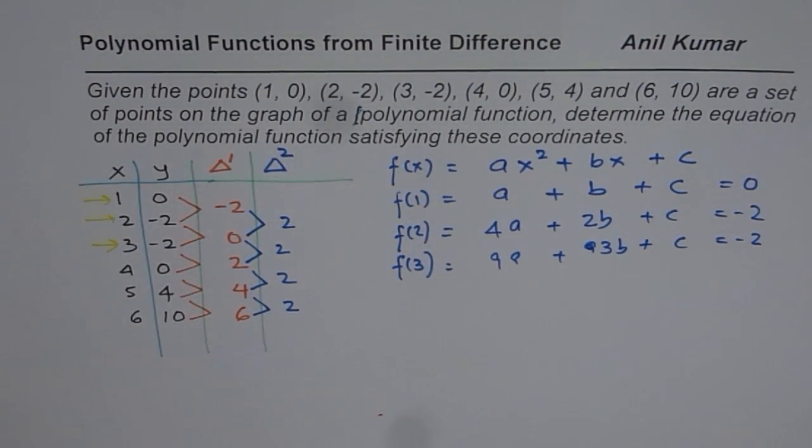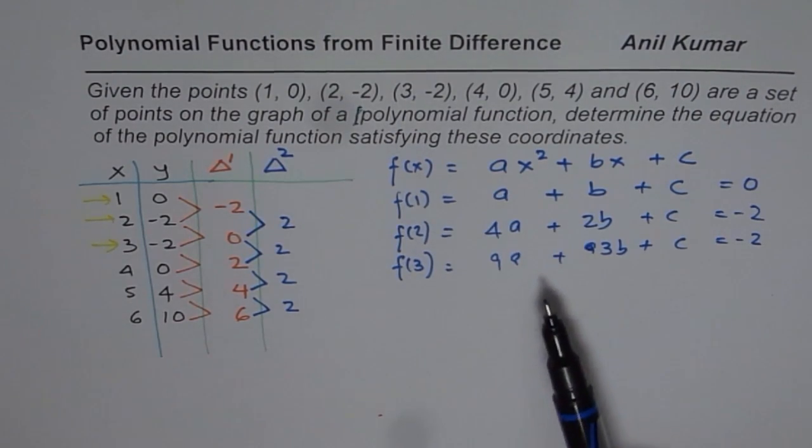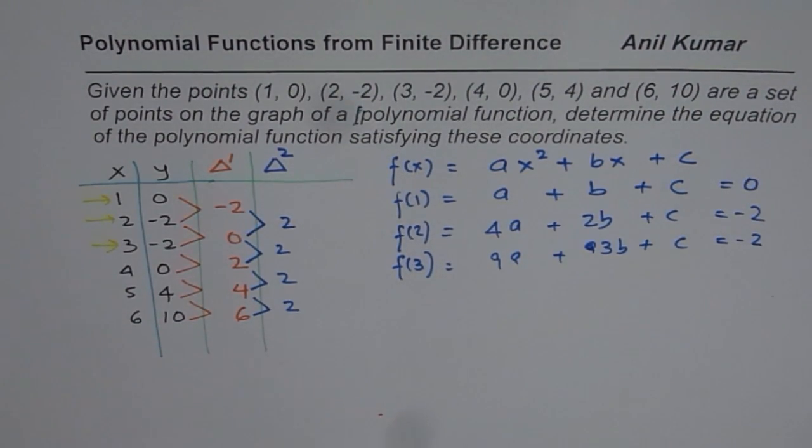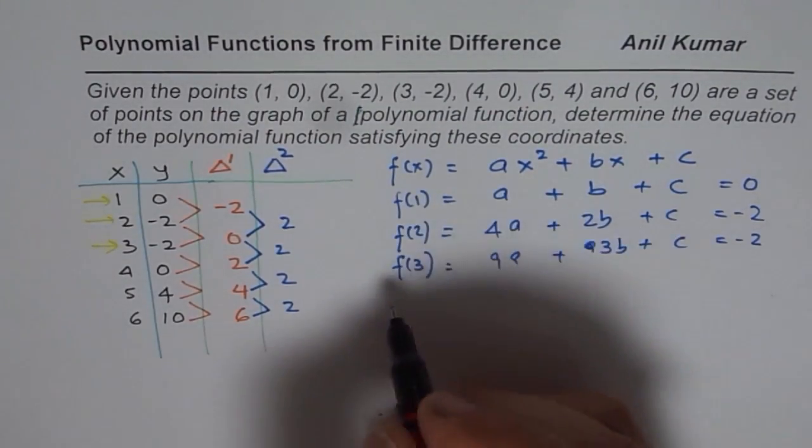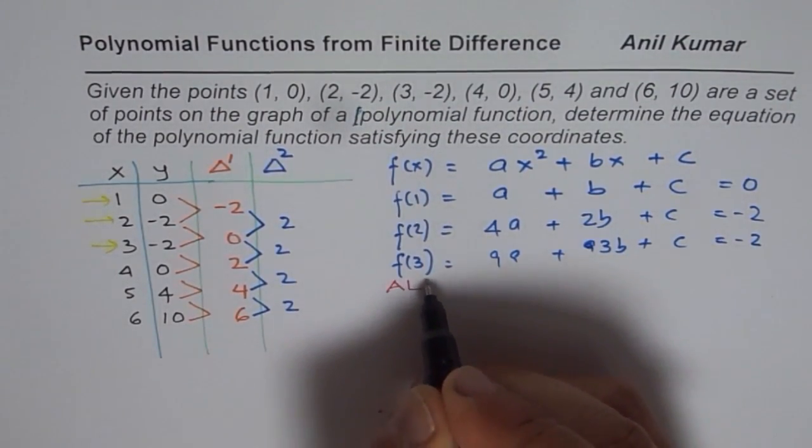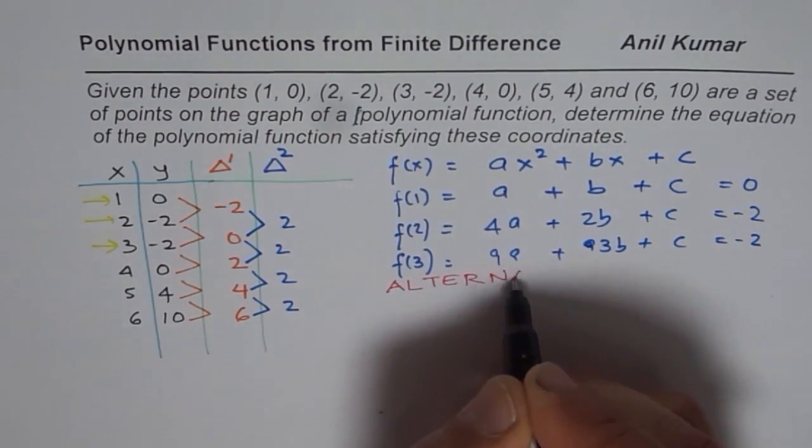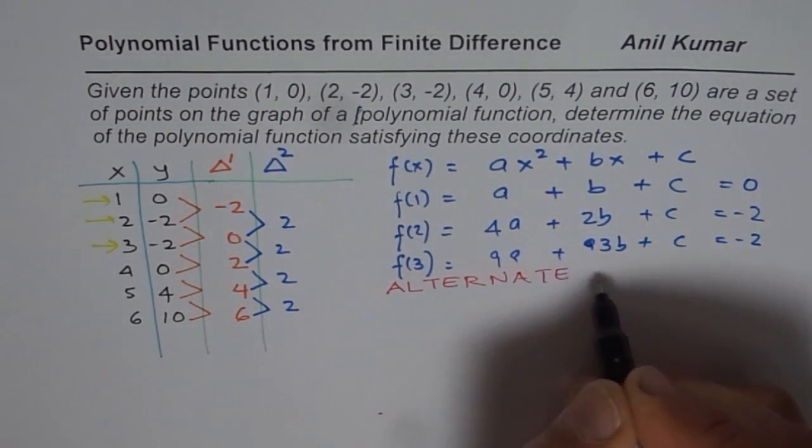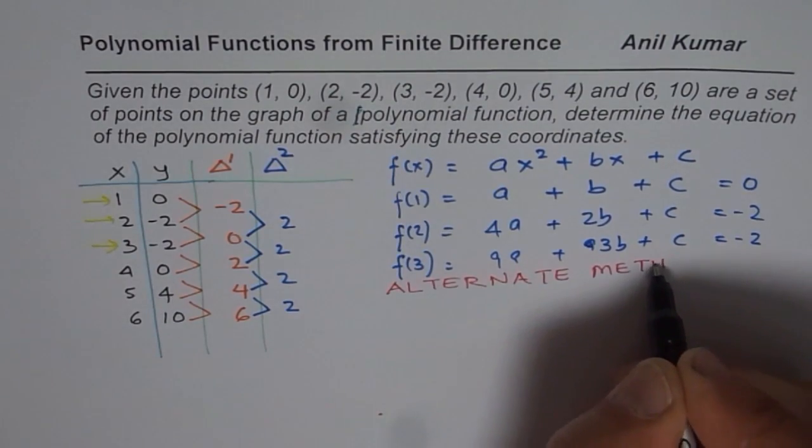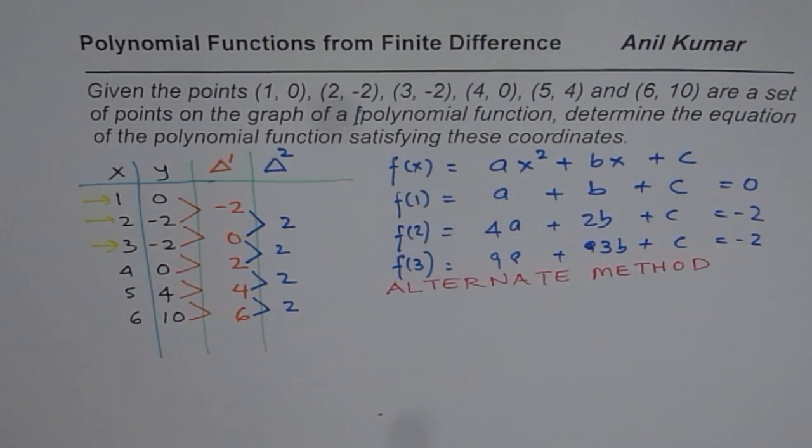And then you will solve these 3 equations to get your answer. And as you can see, solving equations is not an easy job. You may land with wrong answer. It is kind of difficult. Now this is a very simple question. Of course, we have only 3 equations to solve. Now here is an alternate method, which will avoid all these steps. So let me write down big and clear what is my alternate method.